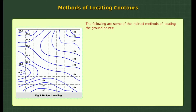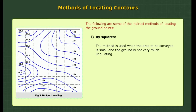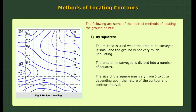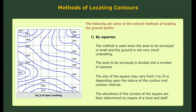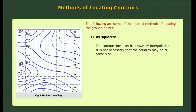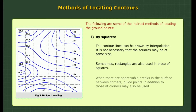1. By squares. This method is used when the area to be surveyed is small and the ground is not very much undulating. The area is divided into a number of squares, with size varying from 5 to 20 metres depending upon the nature of the contour and contour interval. The elevations of the corners of the squares are determined by means of a level and staff, and contour lines are drawn by interpolation. Sometimes rectangles are used in place of squares. This method is also known as spot levelling.